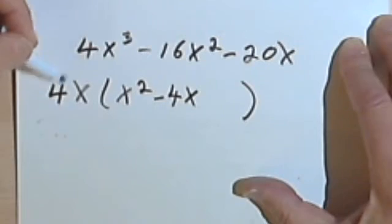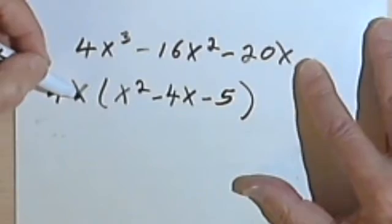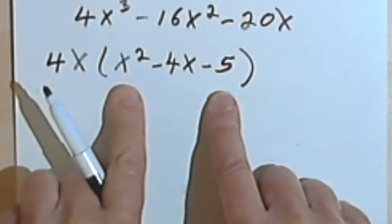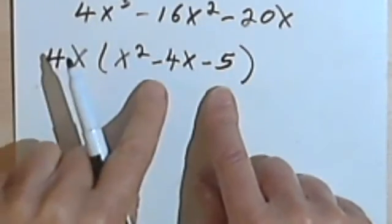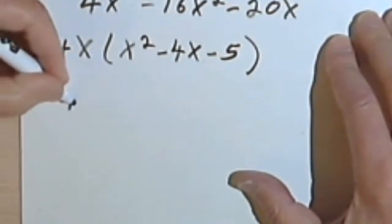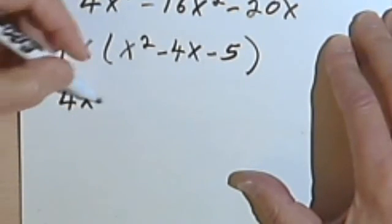Then 4 divided into negative 20 will give me a negative 5, and the x's are going to cancel. So good. Now I've got my second degree polynomial. So we'll factor this. Don't lose this 4x. You've got to keep writing it out as you go through the problem, because that's still one of the factors.